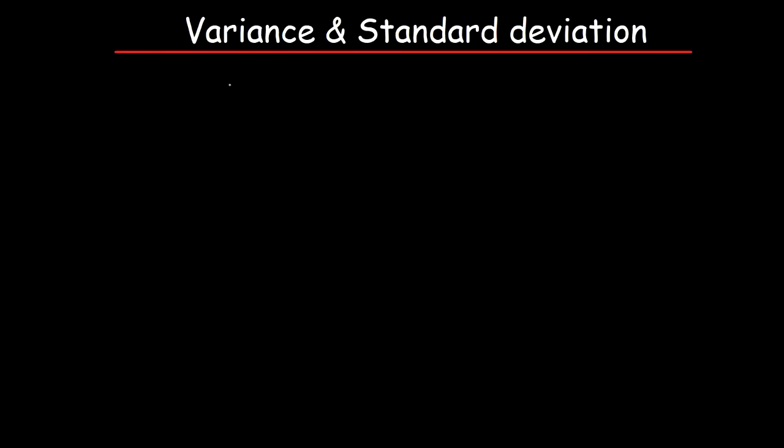In this video we're going to talk about how to calculate the variance and the standard deviation of a list of numbers. The variance, or rather the sample variance, is denoted by the symbol s squared. s stands for standard deviation, and both of these terms measure how far out or how spread out the data is from the center.